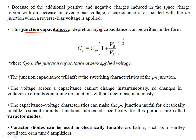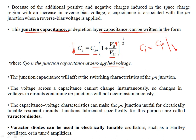The junction capacitance, or depletion layer capacitance, can be written as a function of the applied bias VR. As you increase the bias in the reverse direction, the junction capacitance tends to decrease. Vbi is the barrier potential due to the donor concentrations of pentavalent and trivalent impurities. CJ0 is the junction capacitance with zero applied voltage — when VR is zero, CJ equals CJ0. As you increase the bias, junction capacitance decreases. Normally this junction capacitance is in the order of picofarads — very small.